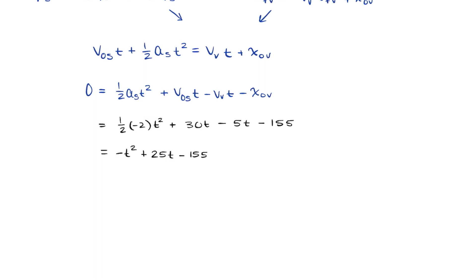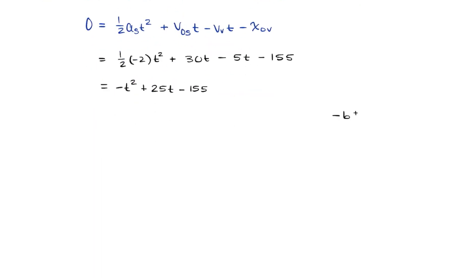Since this isn't factorable by a whole number, we have to use the quadratic formula. Negative b plus minus the square root of b squared minus 4ac over 2a. And let's plug in our values. So negative 25 plus minus the square root of 25 squared minus 4 times negative 1 times negative 155 all over 2 times negative 1.